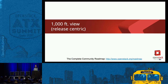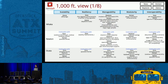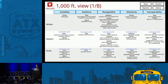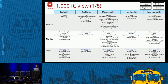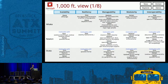Zooming down to the 1,000 foot view, this is a release-centric view made up of eight slides. I'll just take you through two examples. You can see Mitaka, Newton, and Ocata on the rows. Focusing on one project — looking at Glance under resiliency, for instance, Keystone trusts provide larger image uploads that previously failed due to tokens expiring. In Newton, Glance is hardening security for their new V2 APIs and wanting to get V1 APIs deprecated — something being discussed with the Nova team this week at the design summit.